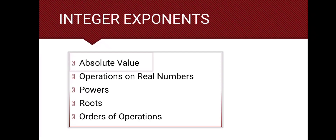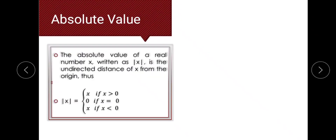Let's first have absolute value. The formal definition is the undirected distance of x from the origin. The absolute value of x equals x if x is greater than 0, equals 0 if x equals 0, and equals negative x if x is less than 0.